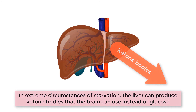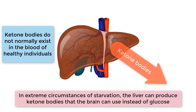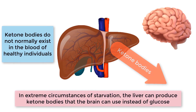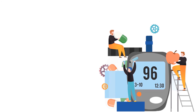In extreme circumstances of starvation, the liver can produce ketone bodies that the brain can use instead of glucose, but ketone bodies do not normally exist in the blood of healthy individuals. Therefore, in order to keep the brain and other central nervous system cells alive, a certain amount of glucose must always be present in the blood. Since the amount of glucose the central nervous system requires doesn't change much, blood glucose levels are kept in a relatively constant range. However, maintaining enough glucose in the blood is not the only factor affecting how the body monitors blood glucose.